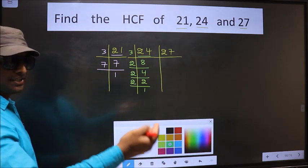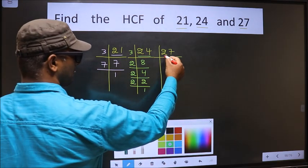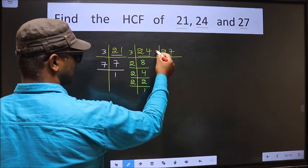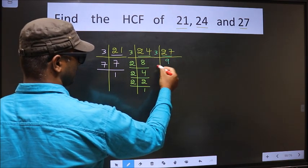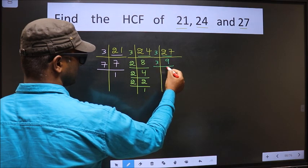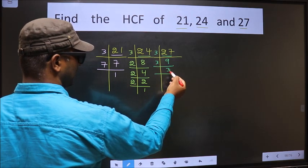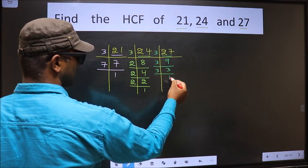Now the other number is 27. 27 is 3 times 9. 9 is 3 times 3. Now we have 3. 3 is a prime number, so 3 times 1 is 3.